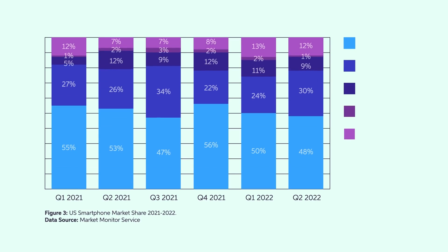In 2022, almost 70% of all smartphones owned in the United States were produced by either Apple or Samsung, a clear duopoly.